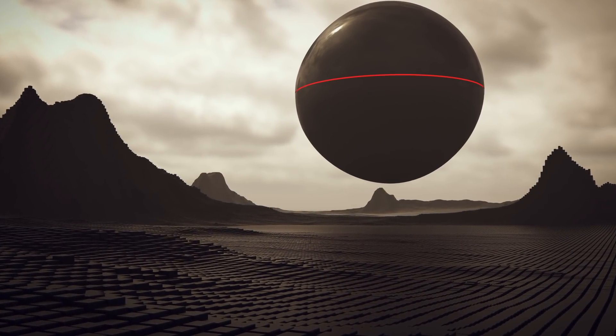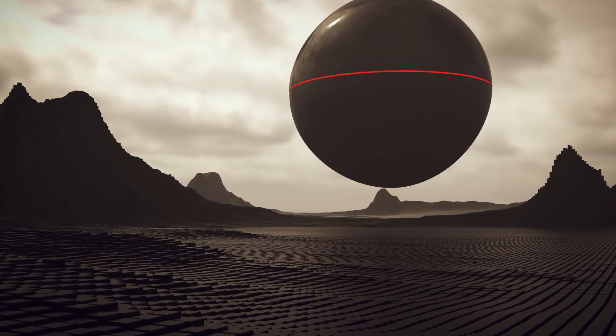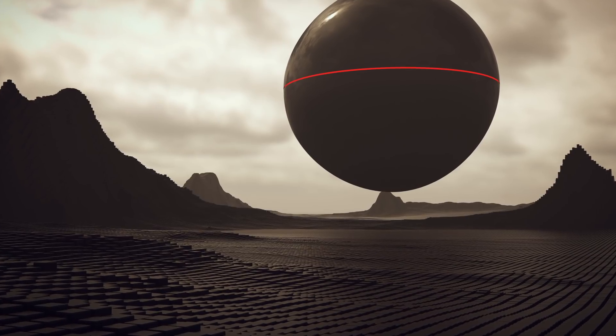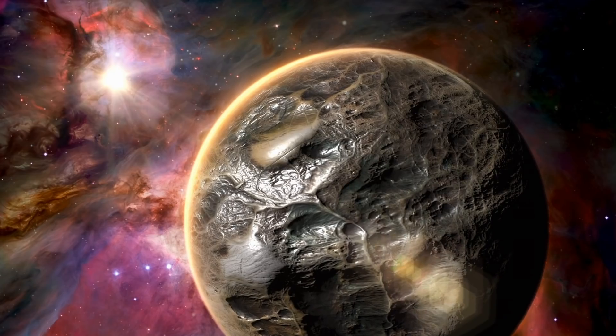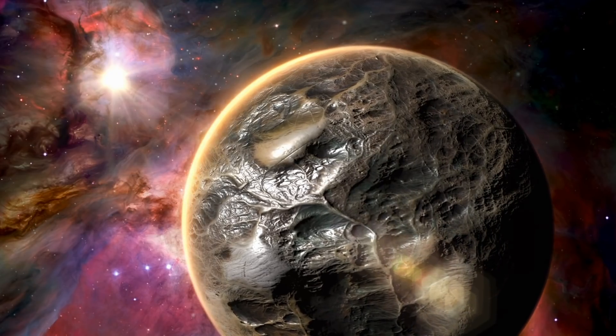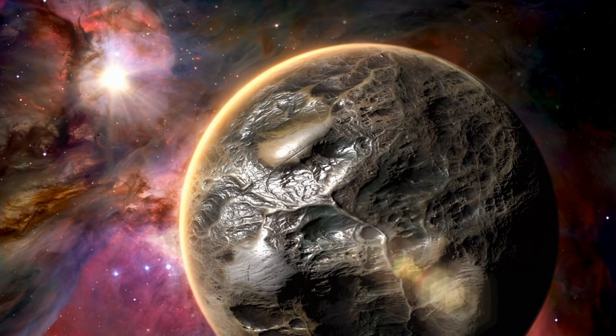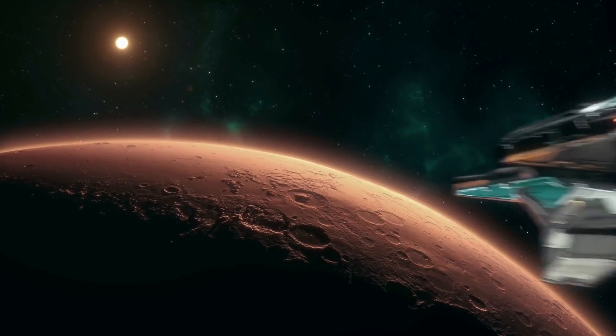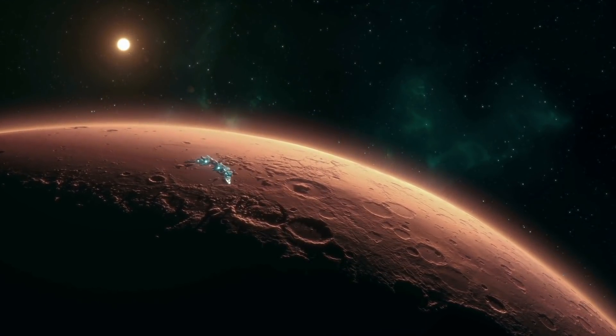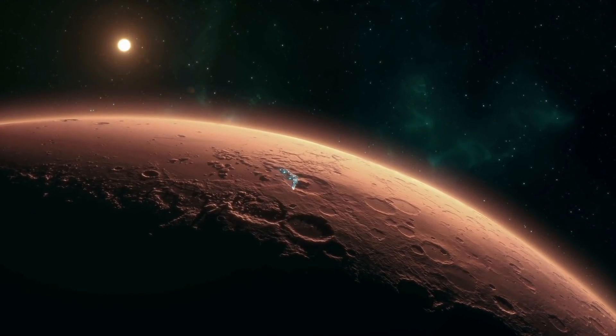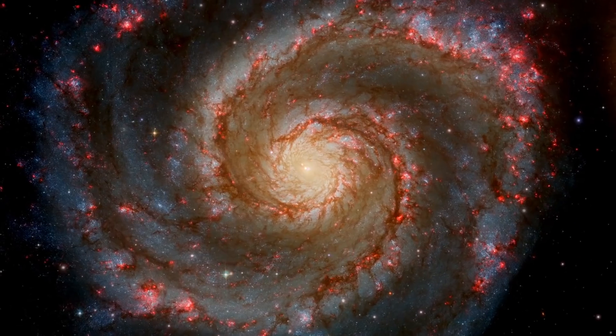From there, it considers how often life evolves on worlds with the right conditions, and how often those life forms ultimately develop detectable technologies. It took more than half a century for scientists to start pinning down how many planets could feasibly host life. But now there is an even harder question to answer: How often can extraterrestrials develop technologies that we can detect, and the length of time such civilizations are detectable?